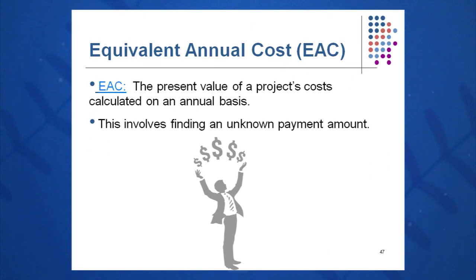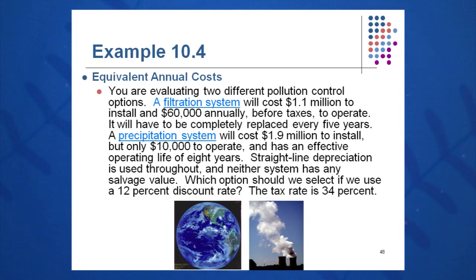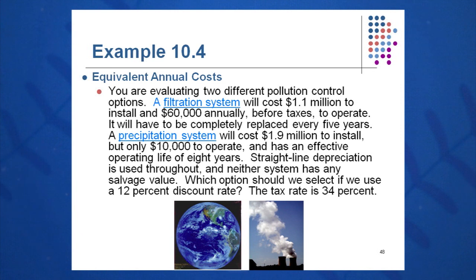The final special case involves projects with similar functions but different costs and useful lives — one may be more expensive to install but have lower annual maintenance costs. In this case, we must calculate the equivalent annual cost (EAC). The example is a chemical manufacturer choosing between a filtration system and a precipitation system, both serving the same pollution control function. The filtration system costs $1.1 million with $60,000 per year in operating costs and a five-year life; the precipitation system costs $1.9 million with only $10,000 per year and an eight-year life. Discount rate is 12%, tax rate is 34%.